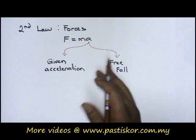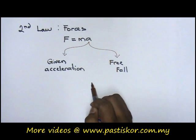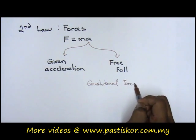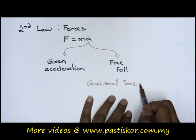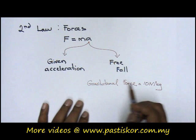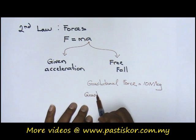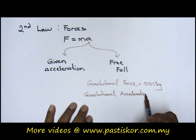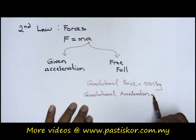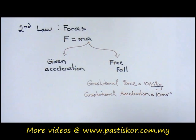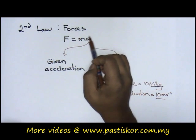The gravitational force is given to us as 10 newtons per kilogram. This is what we call gravitational force. If it is gravitational acceleration, it is the same thing, just that the unit changes — this one is newtons per kilogram. Gravitational acceleration will be 10 m/s². That means the value for A can be substituted as 10.